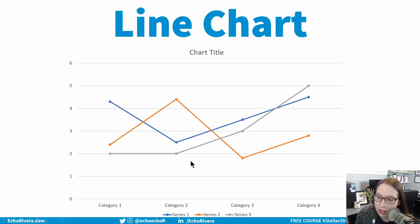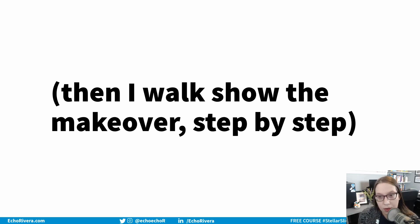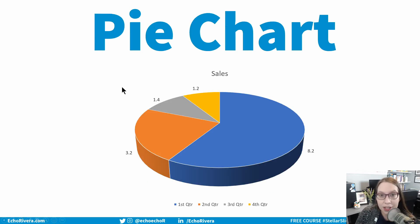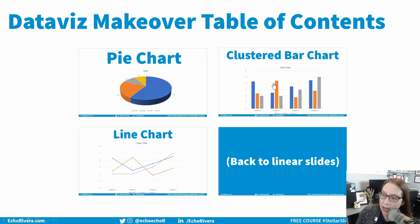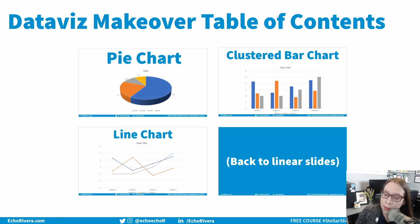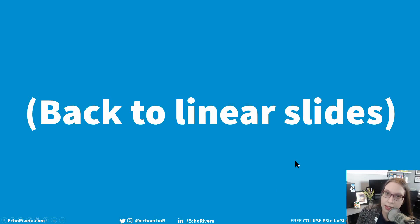So let's say they wanted to see the line chart first — I click on it and now I'm in that line chart section. I walk them through the makeover step by step. When I'm done with the makeover, it takes me back to the table of contents. Then I can click on pie chart, show them the makeover, and we're done. If we have time, I go to the clustered bar chart and repeat. I'm always going back to the table of contents until we're almost out of time, and then I click a special slide I've created that takes me back to the end so I can finish with linear slides.